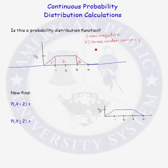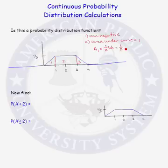Let's look at region number 1. Region 1 is a triangle. The area of a triangle is one-half base times height. The base has length 1 and the height is 1/3, so we see that the area of region 1 is 1/6.